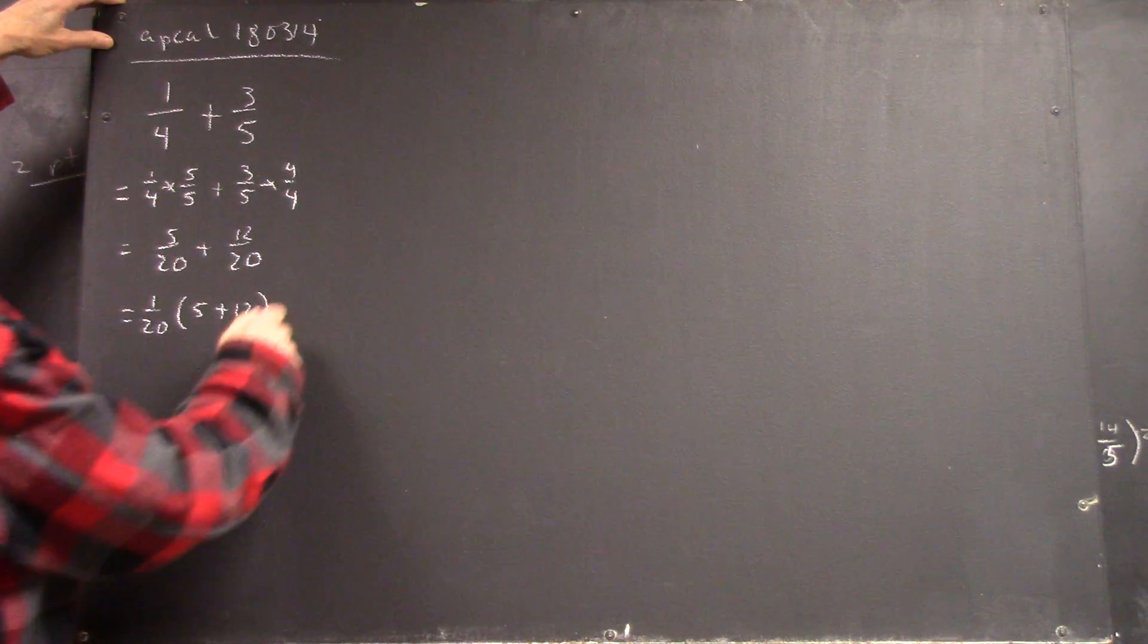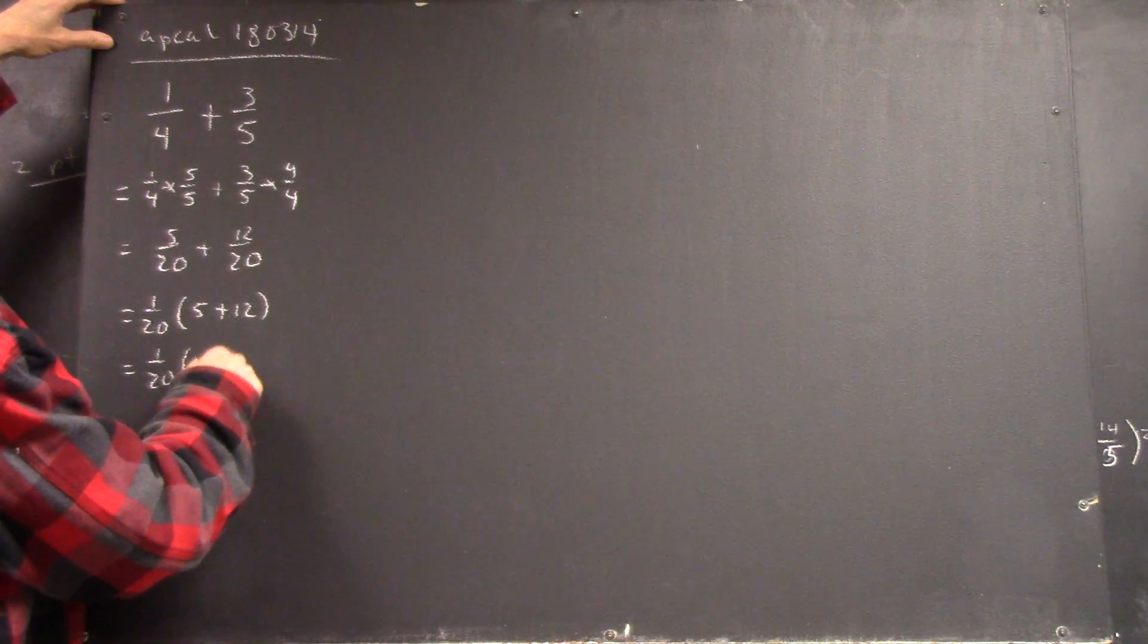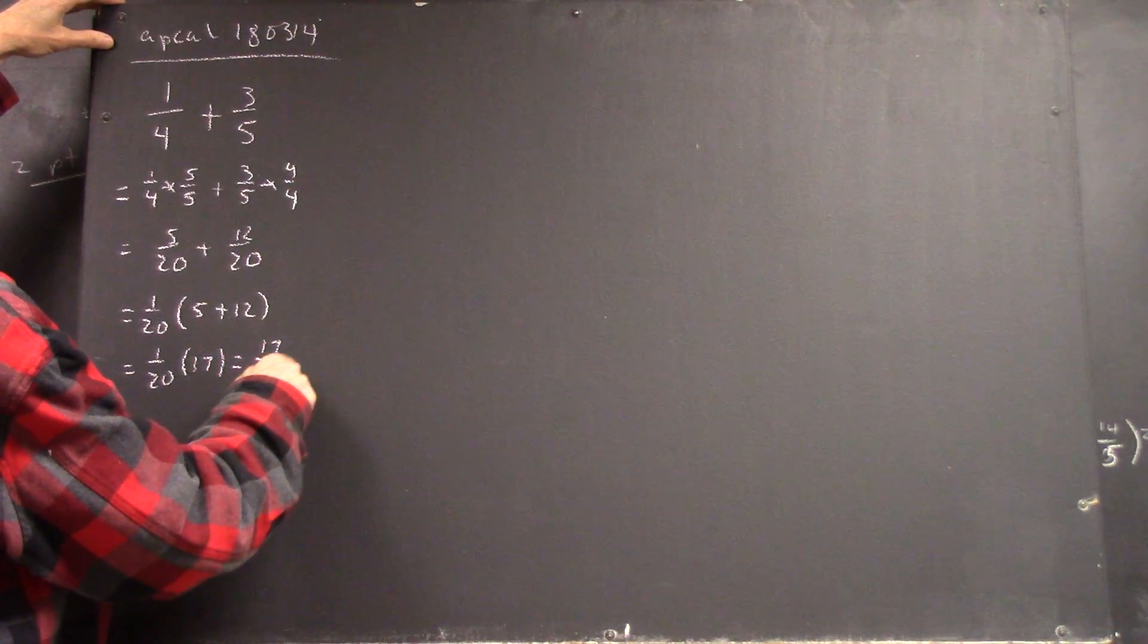Which is one-twentieth times seventeen, which, of course, is seventeen-twentieth.